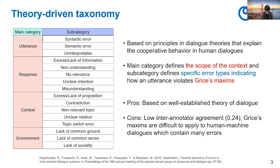Let me go over the two taxonomies. The first one is the theory-driven taxonomy, which has 16 error types. This taxonomy is based on principles in dialogue theories that explain cooperative behavior in human dialogues. The main category defines the scope of the context, and the sub-category defines specific error types, indicating how utterances violate Grice's maxims. The pros is that it is based on well-established theory of dialogue, so it can cover a wide variety of phenomena. As for cons, it has quite a low inter-annotator agreement.